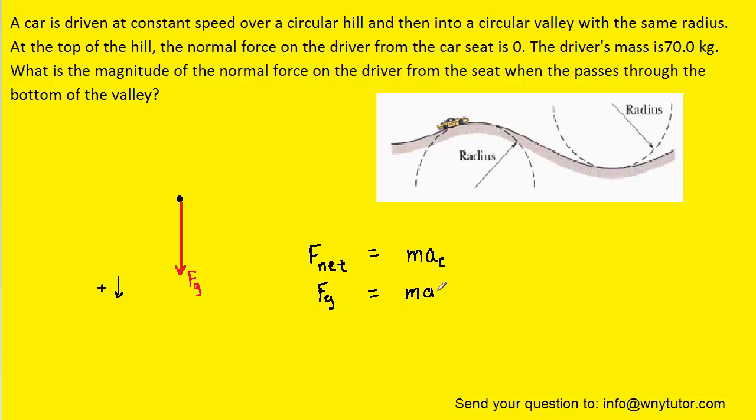And so we recall that centripetal acceleration is equal to the velocity squared divided by the radius, so this is the better form that we need. Now gravitational force we also know is mass times g. And then we'll notice that the mass appears on both sides of the equation so it can be algebraically eliminated.